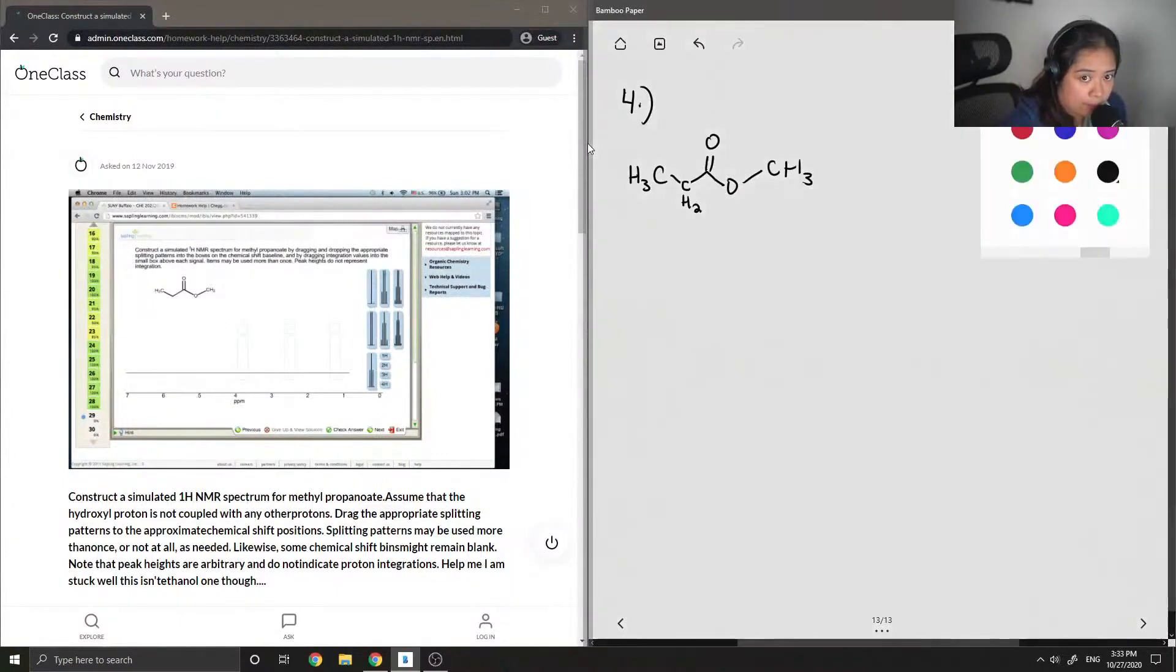So let me actually write this out as a CH2. And then if you look at each of the different hydrogens, we want to look at all of the chemically non-equivalent protons because that's how many signals we will have.